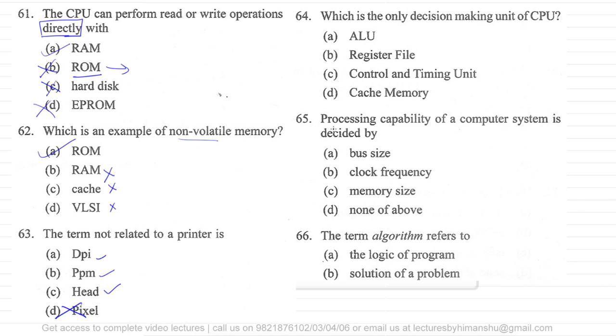Now look at these questions. Which is the only decision making unit of CPU? Now there is only one decision making unit and that unit is called as mathematical and logical units, ALU. So let me figure out these questions one by one. Cache memory you cannot make decision. Register file you cannot make decision.